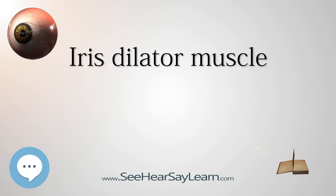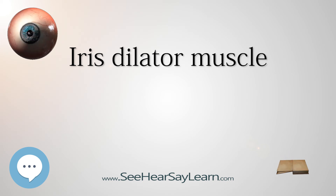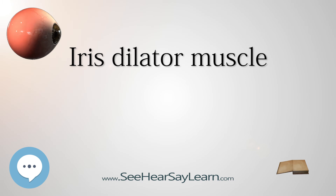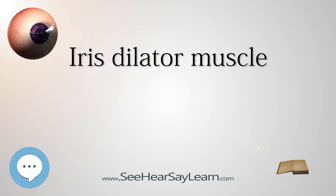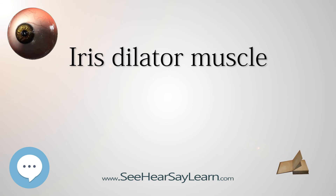The expression dilator pupillae muscle, as used in the list of English equivalents of the Terminologia Anatomica, is actually partly Latin — i.e. dilator pupillae, with pupillae meaning of the pupil, a noun in the genitive case modifying dilator, a noun in the nominative case — and partly English, i.e. muscle. In previous editions of the Nomina Anatomica, this muscle was officially called the musculus dilator pupillae. The Nomina Anatomica as authorized in 1895 in Basel and in 1935 in Jena used the full Latin expression.